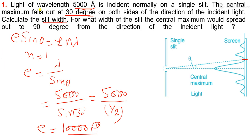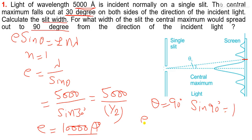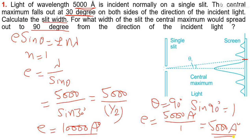The next part is: for what distance of the slit would the central maximum spread out to 90 degrees from the direction of incident light? So theta equals 90 degrees and sin 90 is 1, so e equals lambda means 5000 angstrom upon sin 90, so the value of slit width is 5000 angstrom.